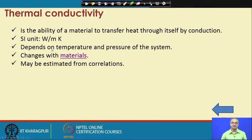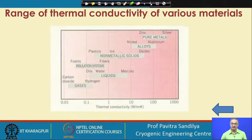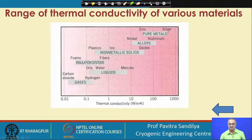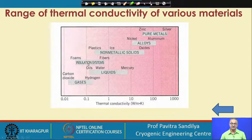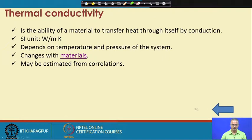The value of thermal conductivity is a function of both temperature and pressure of the system and also of the materials. There are various types of materials: highly conductive materials like pure metals — silver, aluminum, zinc — then very low conductivity materials like non-metallic solids, ice, plastics, fibers, then insulations, then liquids, and lastly gases, which have the lowest thermal conductivities. This thermal conductivity may be estimated from various types of correlations developed from experimental data.